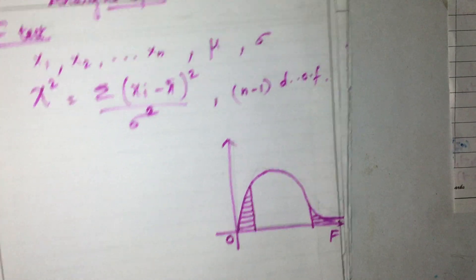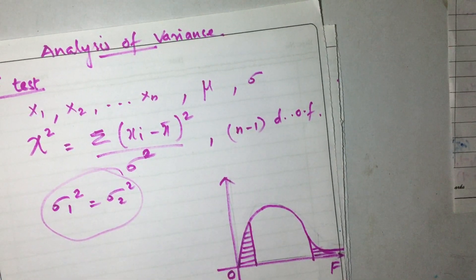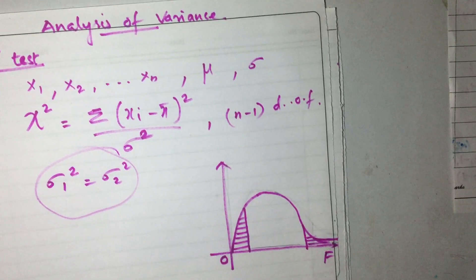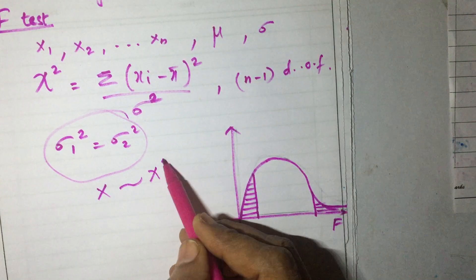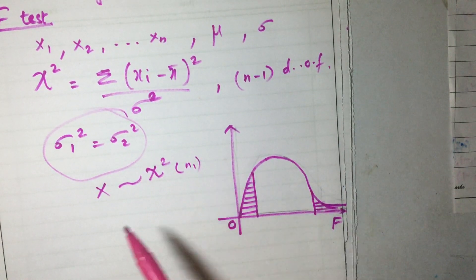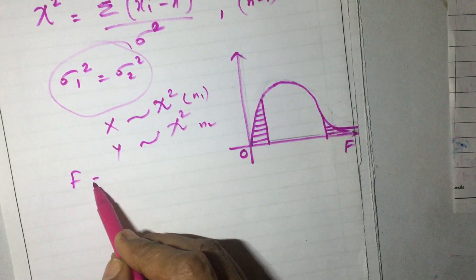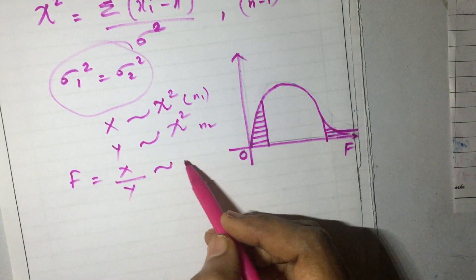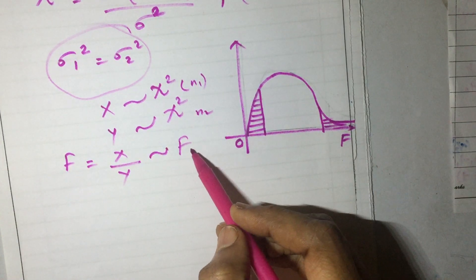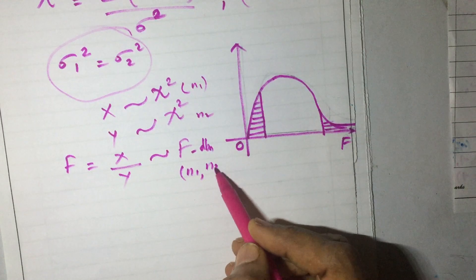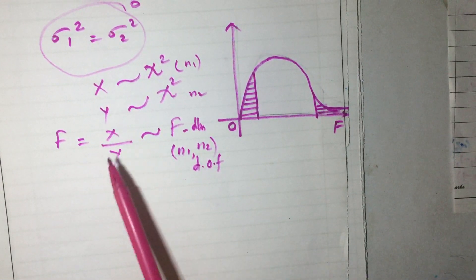In the F-test, we test the equivalence of variances — that is, whether sigma1 squared equals sigma2 squared — using the F distribution. Suppose a random variable x follows a chi-square distribution with n1 degrees of freedom, and y follows a chi-square with n2 degrees of freedom. Then F equals x divided by y, and this ratio follows an F distribution with degrees of freedom n1 and n2.